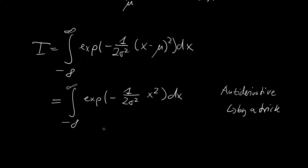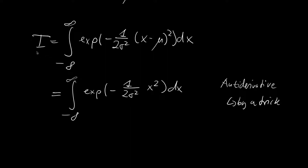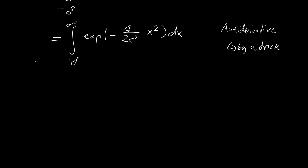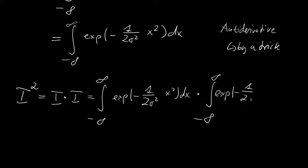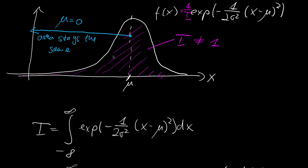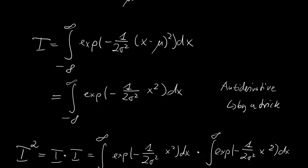The trick works as follows: instead of evaluating the area under the curve directly, we evaluate the square of the area — I squared. I squared is just I times I, which gives us the integral from minus infinity to plus infinity of the exponential of minus 1 over 2 sigma squared times x squared, dx, multiplied by the integral from minus infinity to plus infinity of the exponential of minus 1 over 2 sigma squared times x squared, dx.